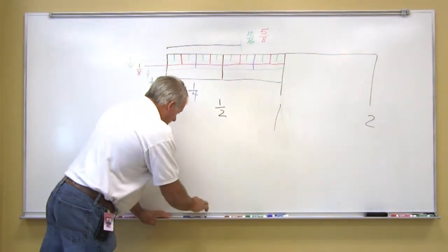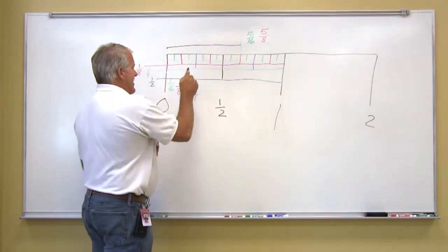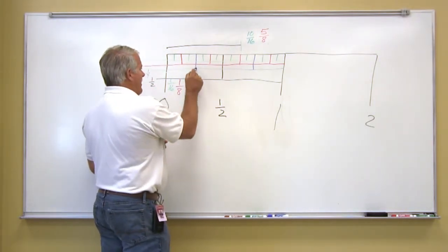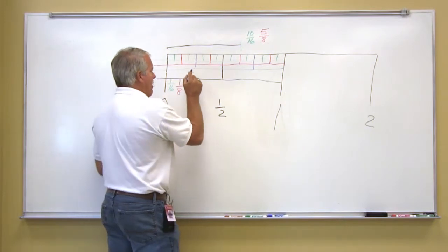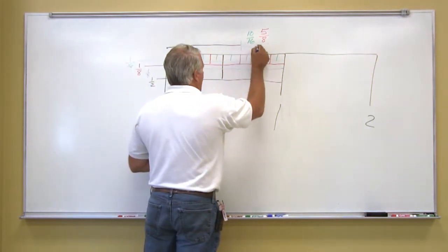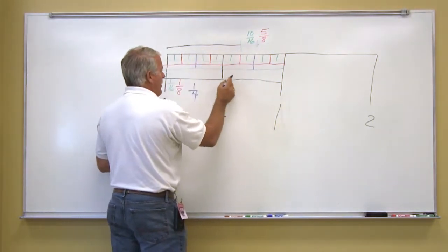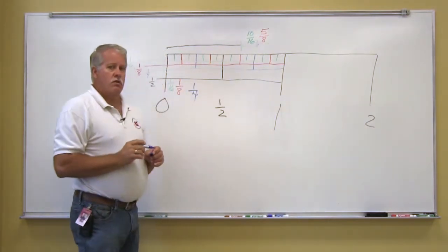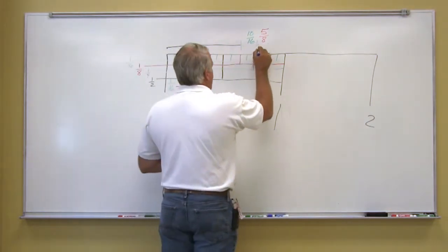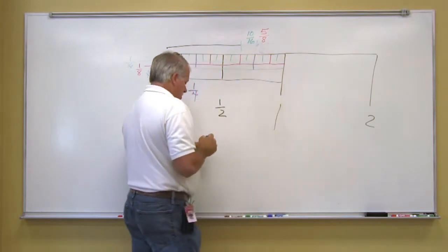When we get to the quarter-inch marks, it's the same thing. We would count that length of line and any line longer. So if the line came out to here, it would be one, two, three-fourths. So that particular line would be three-fourths.